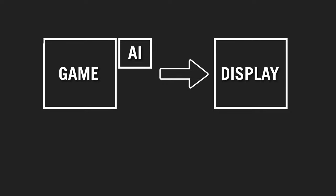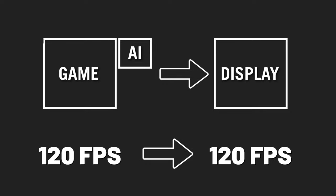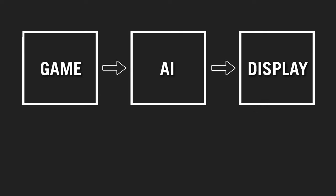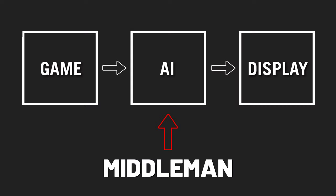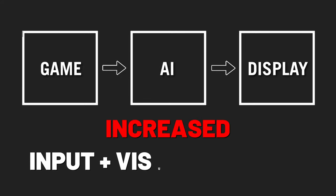There is something important to note about this AI generation technology. If a game has FSR 3.0 built in, like Call of Duty, the frame rate you see is the frame rate you get. However, if a game does not have this feature built in, it follows a more lengthy process — what the game displays must first process through the AI generation before being shown on your screen. So a game running at 60 FPS may display at 120 FPS, but there is a chance of increased input and visual latency.